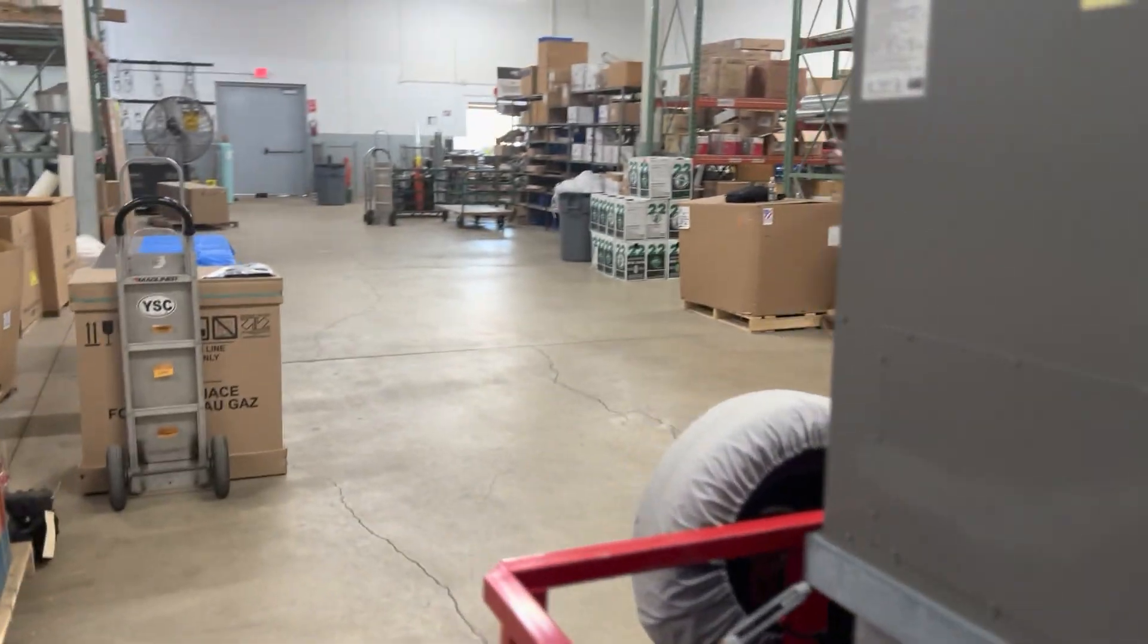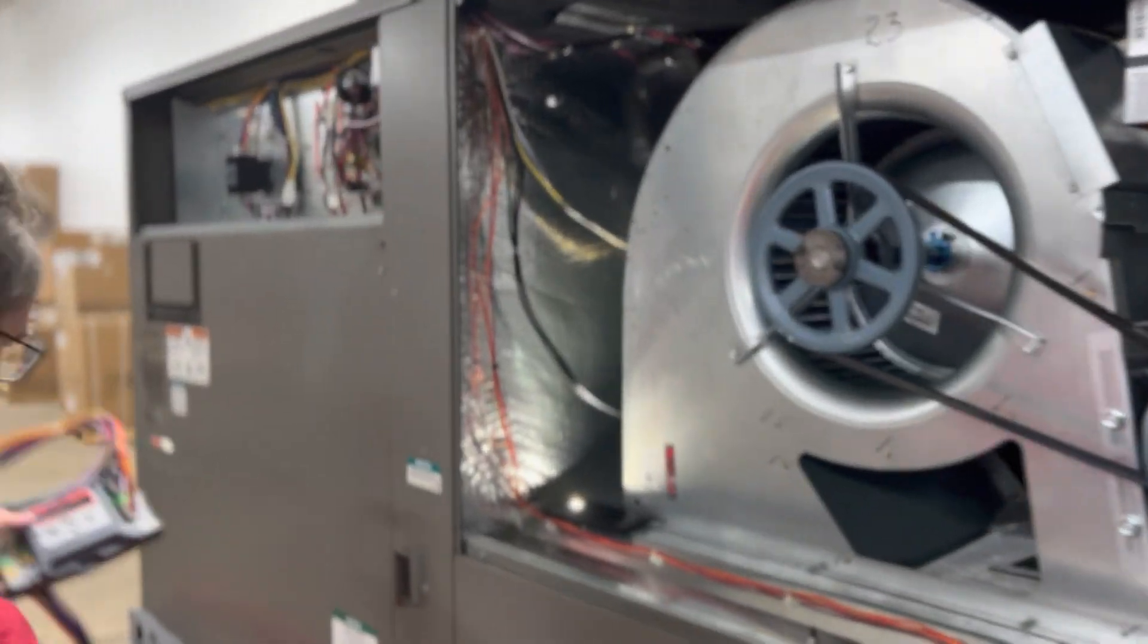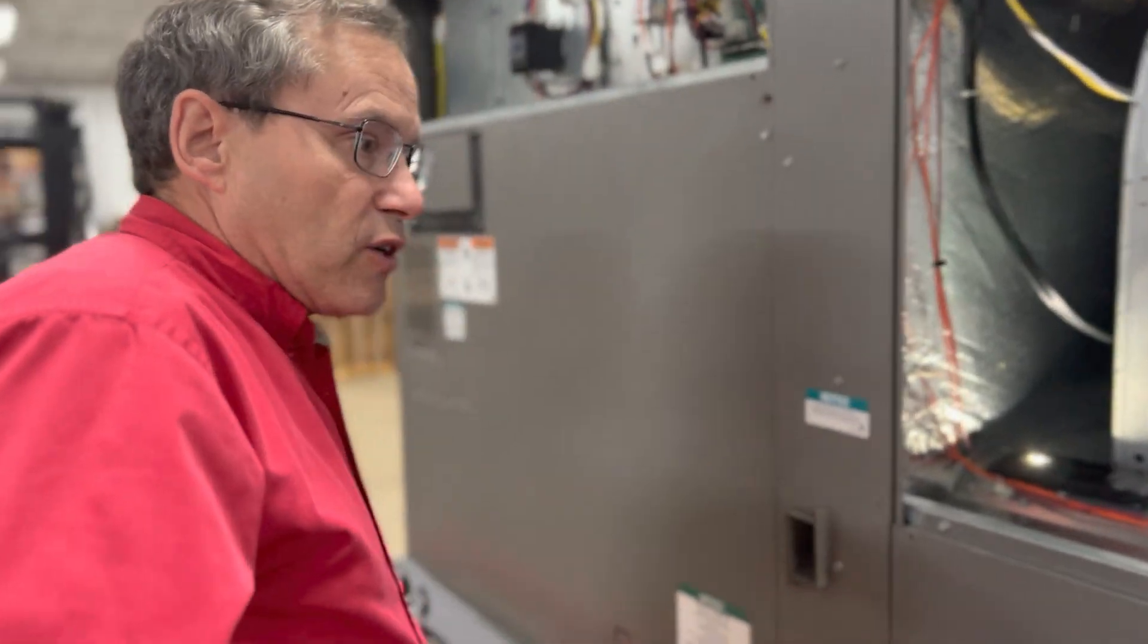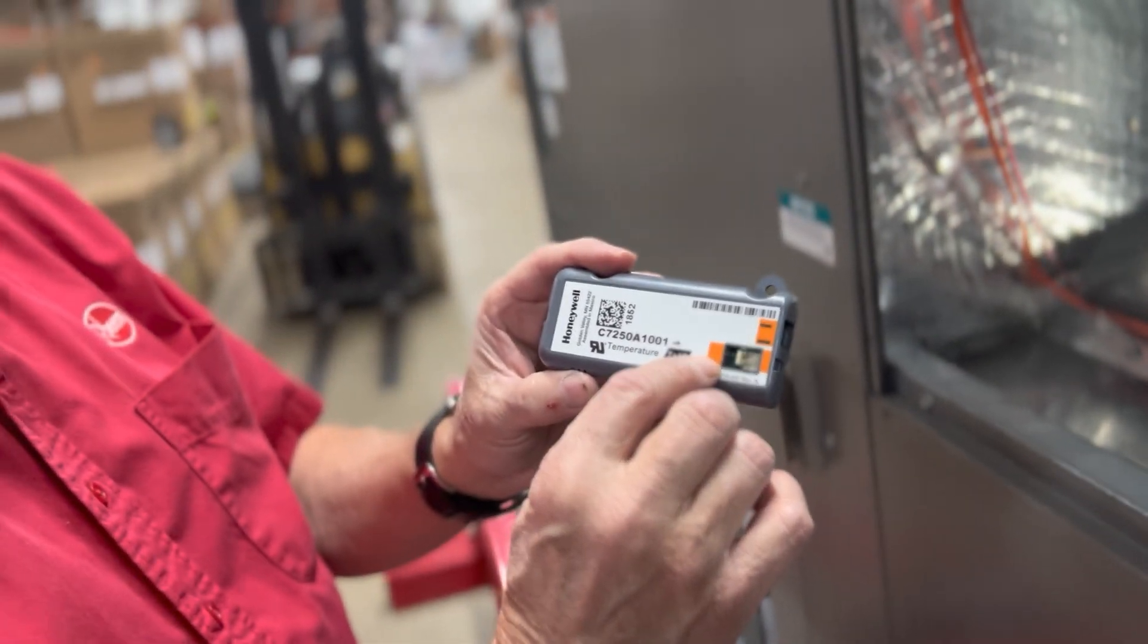We'll go to the other side now. Step two is to install the mixed air sensor. This looks like the enthalpy control, but it has an orange tag, which makes it the mixed air sensor.